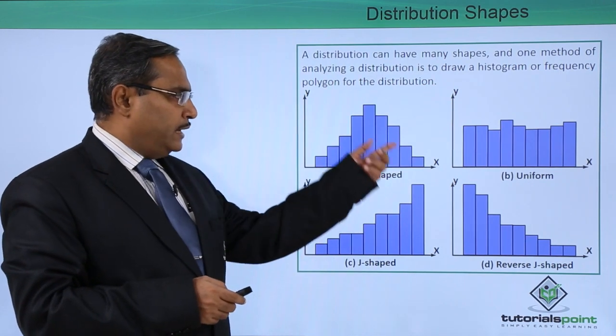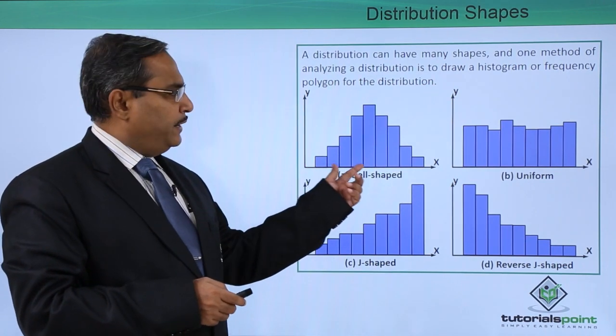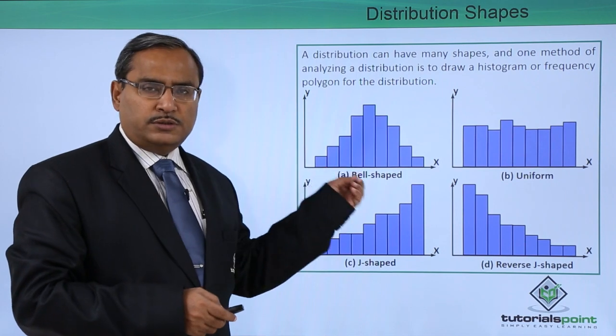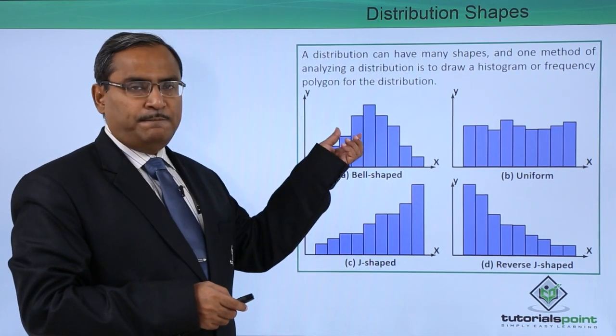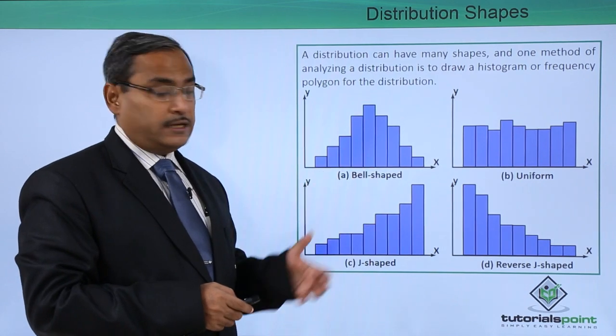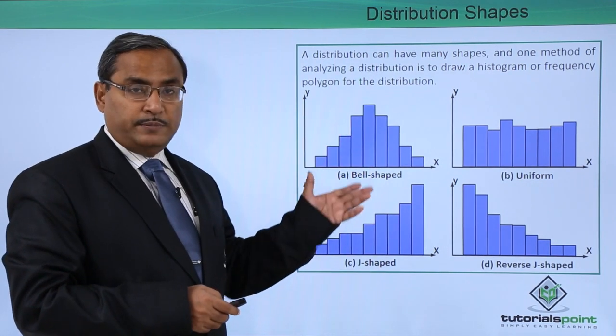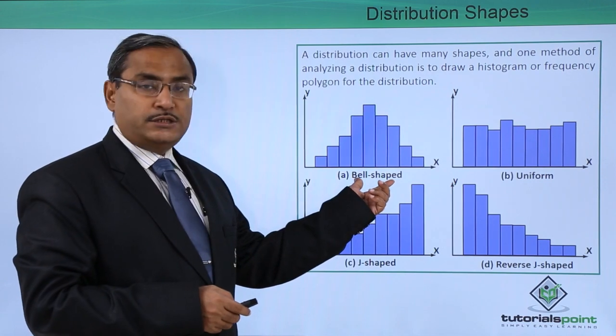If the histogram is having a shape like this, you can find that it is having a good tendency towards the central. The central tendency is high for this particular dataset because the density in the center is very high, and it is known as bell-shaped.